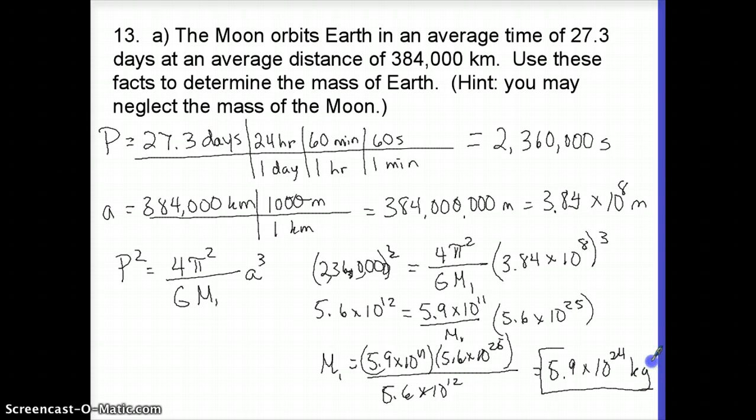So when we do all of that, I get about 5.9 times 10 to the 24 kilograms. Which if you look in the back of your book in Appendix E, you will see that that is about the correct mass of earth. If you didn't quite get my algebra in this last step here, you may want to come talk to me about that during class when you're working on some problems. And again, be careful of your exponents and your units and things like that. So very important to watch all of those units and conversions and everything.